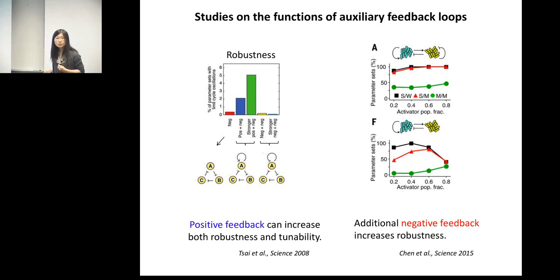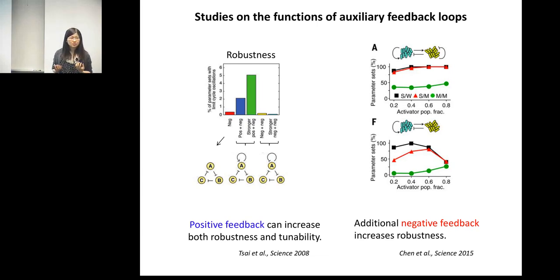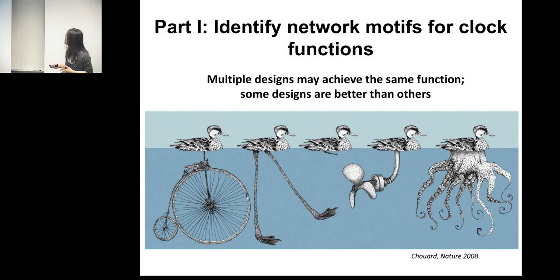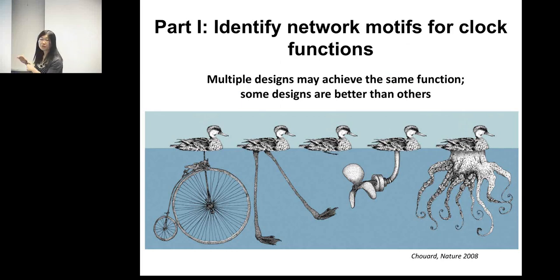However, a more recent study seems to have a different result. In that study, they built an activator bacterium and a repressor bacterium interacting through quorum sensing to form an oscillator at the population level. They found that adding a self-negative feedback increased the robustness of this oscillator. We think the discrepancy comes from the fact that both studies only chose a subset of networks to examine. In reality, different designs can achieve the same function, even though some designs might be more efficient than others.